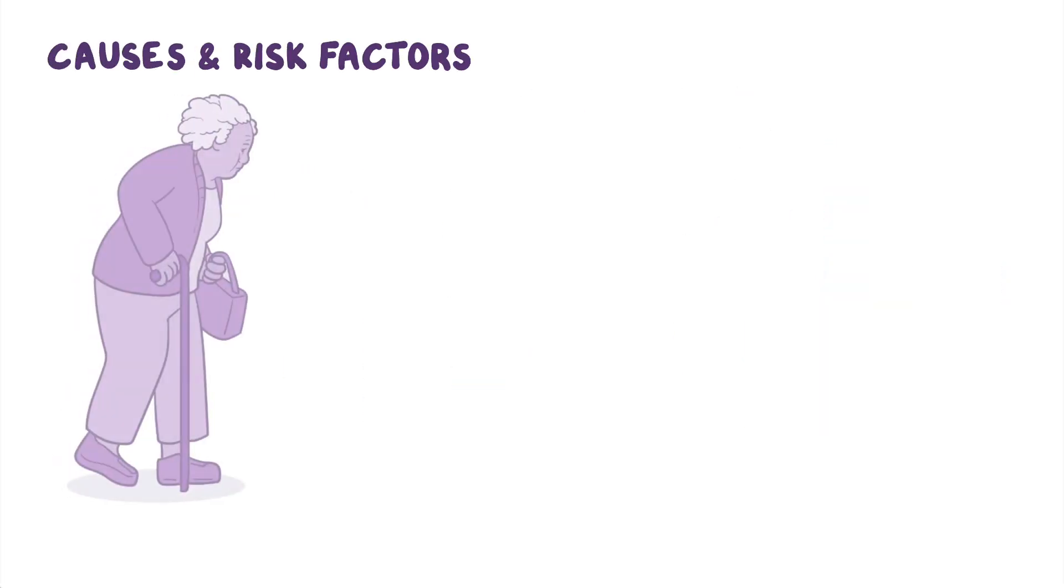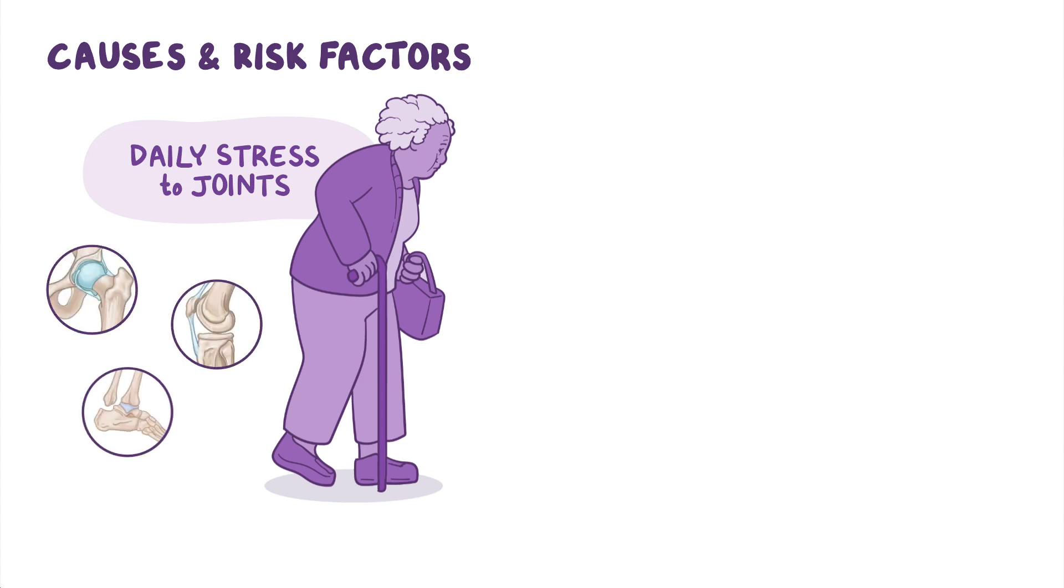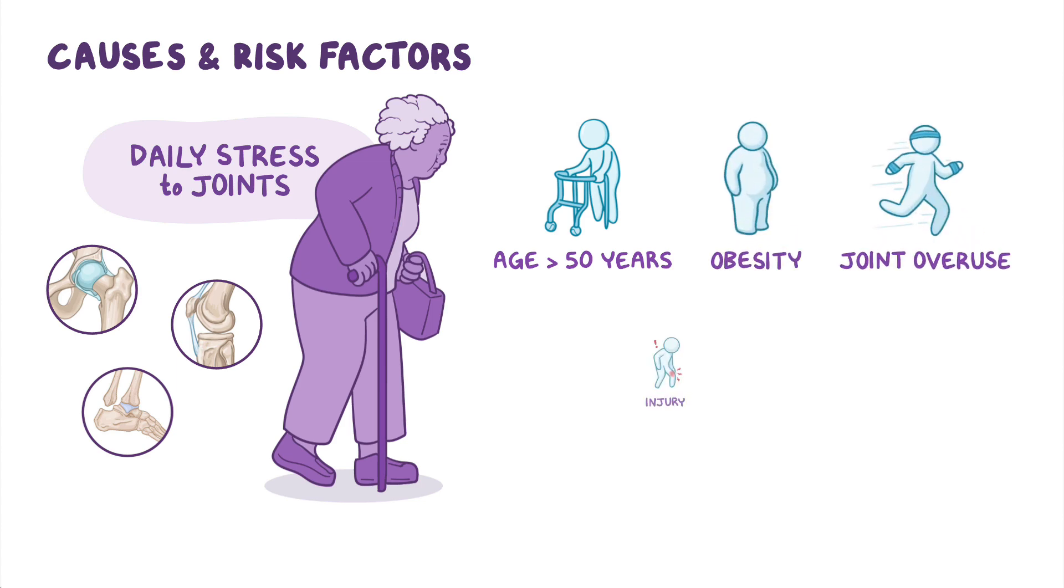Now, the main cause for osteoarthritis seems to be the daily stress applied to synovial joints throughout an individual's lifetime, especially to weight-bearing joints like those of the hip, knee, and ankle. This is why the biggest risk factor for osteoarthritis is age, especially after 50 years, alongside obesity, joint overuse or injury, and altered walking patterns, which can increase joint stress.